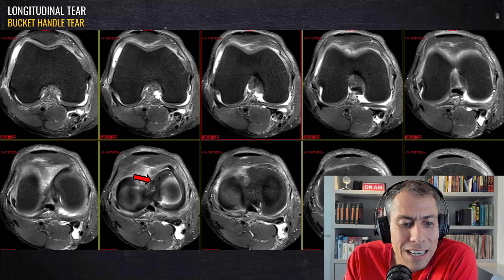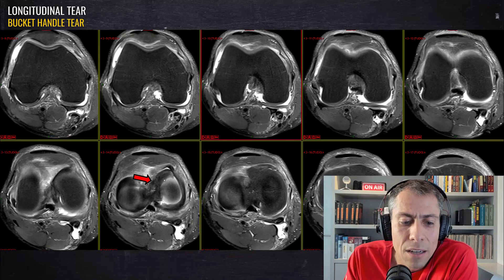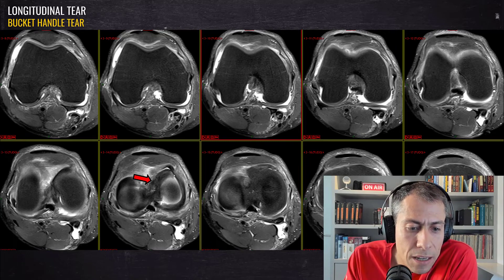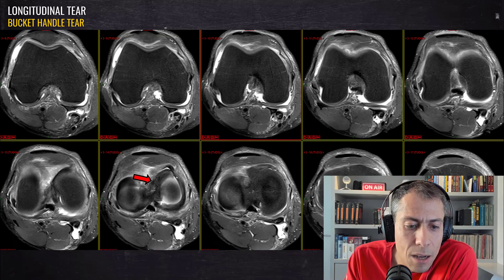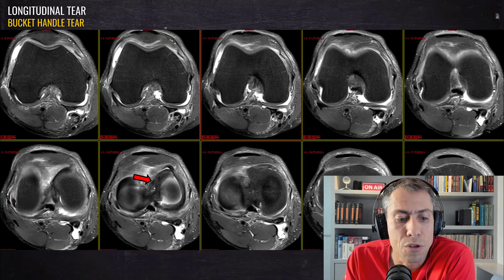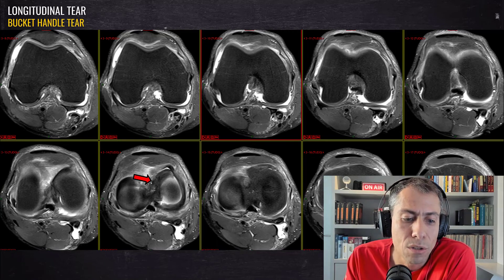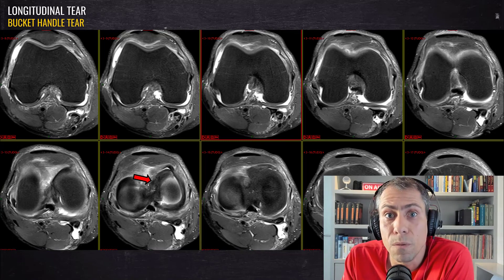Here we can also see in the axial plane the fragment in the intercondylar region of the knee. Here is the native meniscus — that's the periphery of the meniscus — and here is the huge bucket handle tear fragment in the middle of the knee, in the intercondylar region.